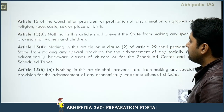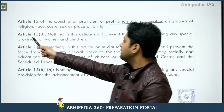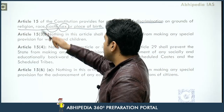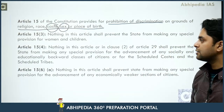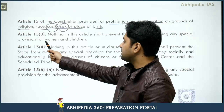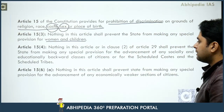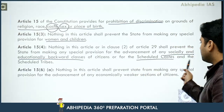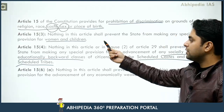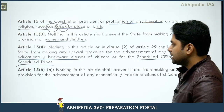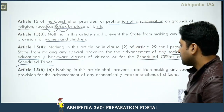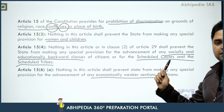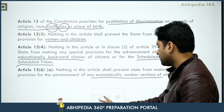Article 15 provides prohibition for discrimination on the ground of religion, race, caste, sex or place of birth. Article 15(3) states that the state can make special provisions for women and children. Article 15(4) states that for socially and educationally backward classes the state can take special measures, including scheduled castes and scheduled tribes. And Article 15(6) sub-clause (a), added by the 103rd amendment, states that nothing shall prevent the state from making special provisions for advancement of economically weaker sections. So yeh teeno hi exceptions hain under Article 15 of the Constitution of India.